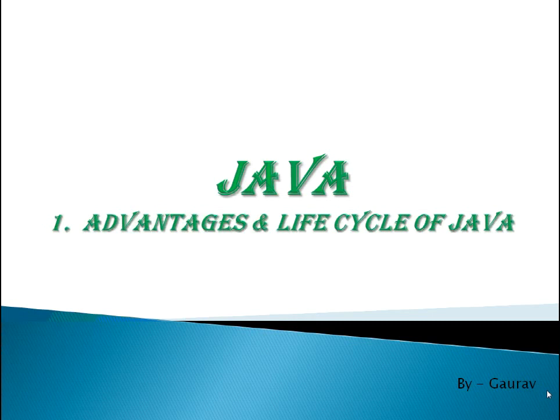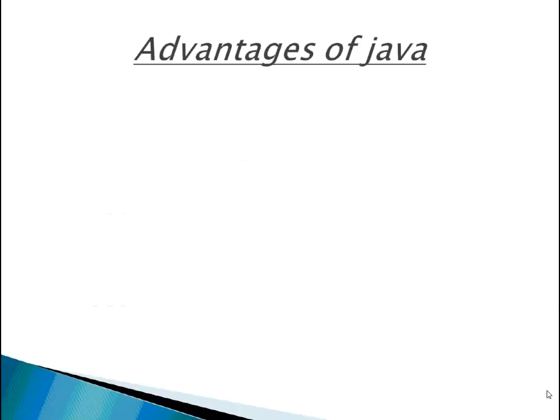If you are a beginner, you probably have the question: what are the advantages of Java as compared to other programming languages? Java is simple. Java is made simple because difficult concepts of C and C++ have been omitted in Java. For example, pointers. And also, it maintains the same syntax of C and C++.